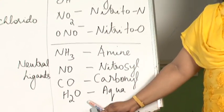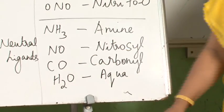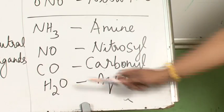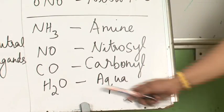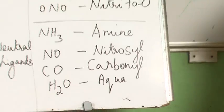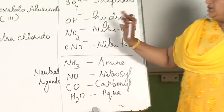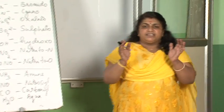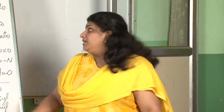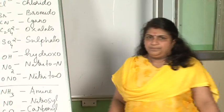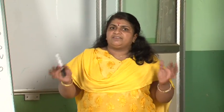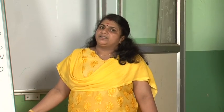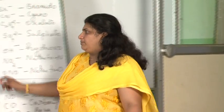Now it comes to some neutral ligands. Neutral ligands are named as follows: NH₃ is called amine, NO is called nitrosyl, CO is called carbonyl, H₂O is called aqua. Whether the coordination entity is positive or negative, the name of the neutral ligand will remain the same.